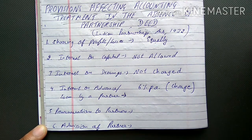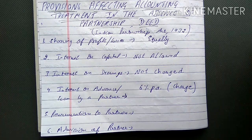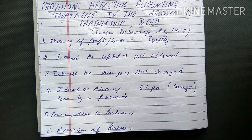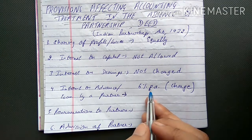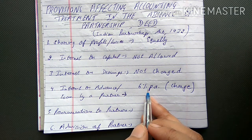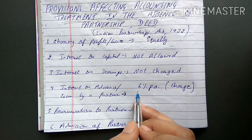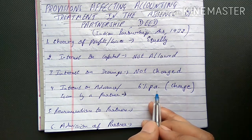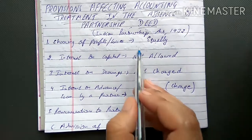This interest on loan is treated as a charge for the company. A charge means it is a fixed, compulsory expense for the firm — just like a bank loan where the bank must receive its interest regardless of whether the firm has income or not. Similarly, whether there is profit or loss, the firm must pay 6% per annum interest to the partner who gave the loan.